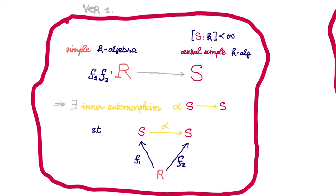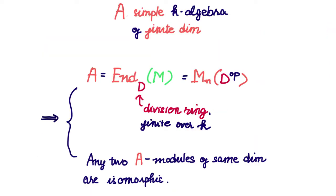The fact that both R and S are finite dimensional simple k-algebras is the key. This is because finite dimensional simple k-algebras have two very important properties. The first one is that they can be realized as endomorphism rings of some modules. And the second key property is that modules over such algebras are uniquely determined by their dimension.